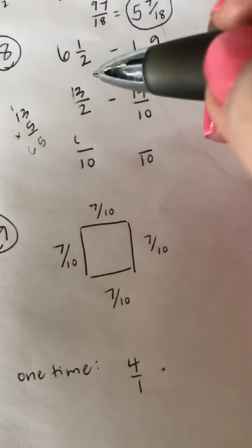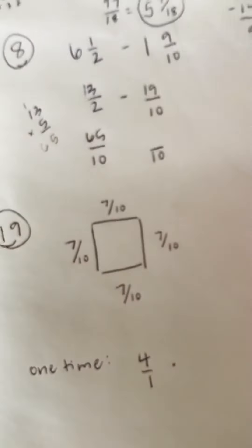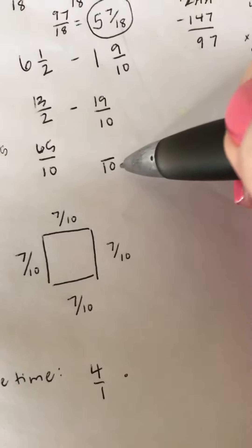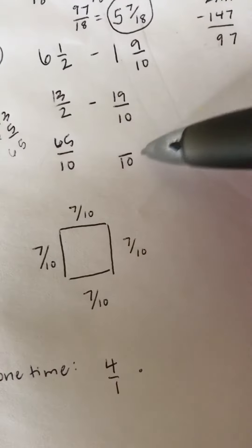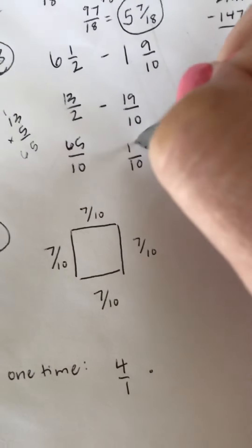And then, keep the denominator is 10. And then 10 does not do anything to get to 10. 10 times 1 is 10. So 19 times 1 is just going to be 19.